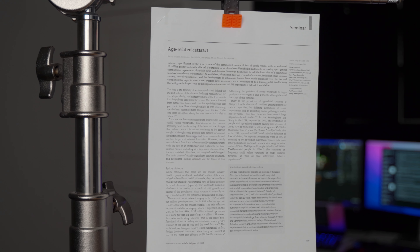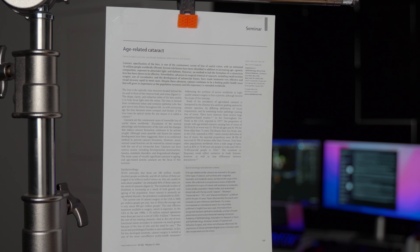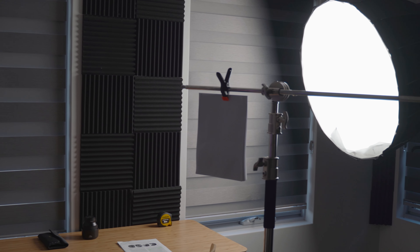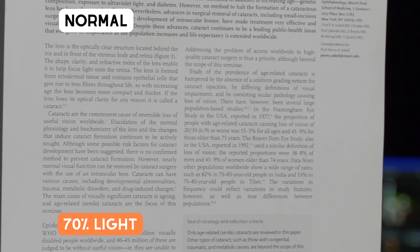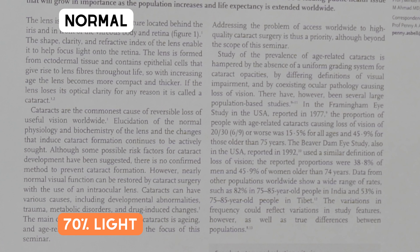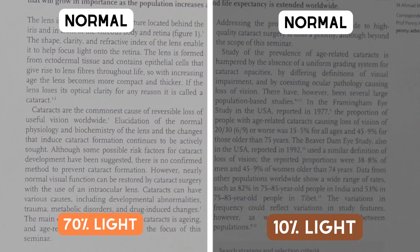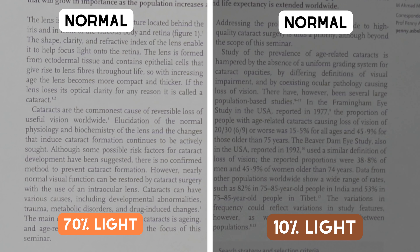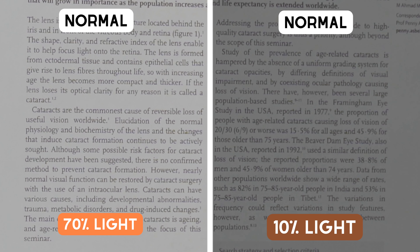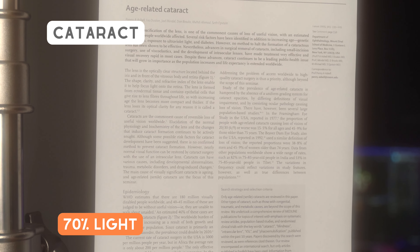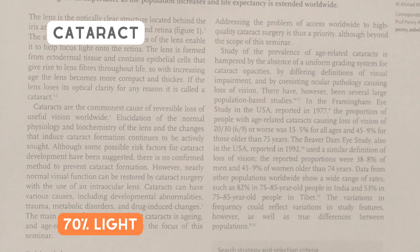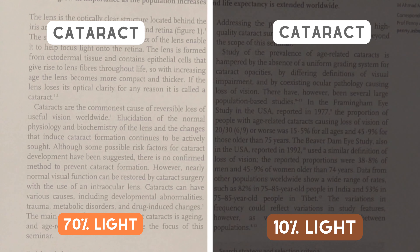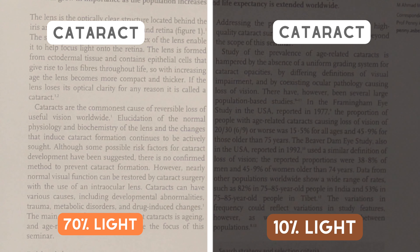How would cataracts behave in an indoor setting? This is a scientific paper that I've illuminated using a softbox at about 3 feet. With good enough lighting, the paper is well lit and reading isn't a problem. If however the lighting was bad, then you can see that reading becomes noticeably more difficult. When I introduce cataracts into the mix, you can see that despite having good lighting, there is a steep reduction in contrast. And having bad lighting just exacerbates the issue.